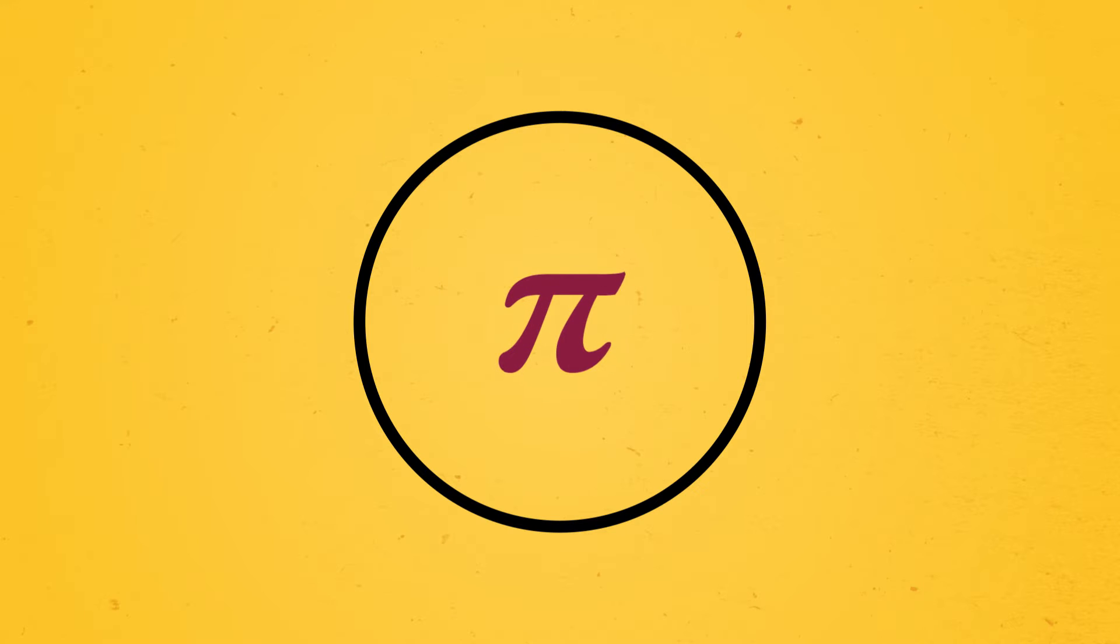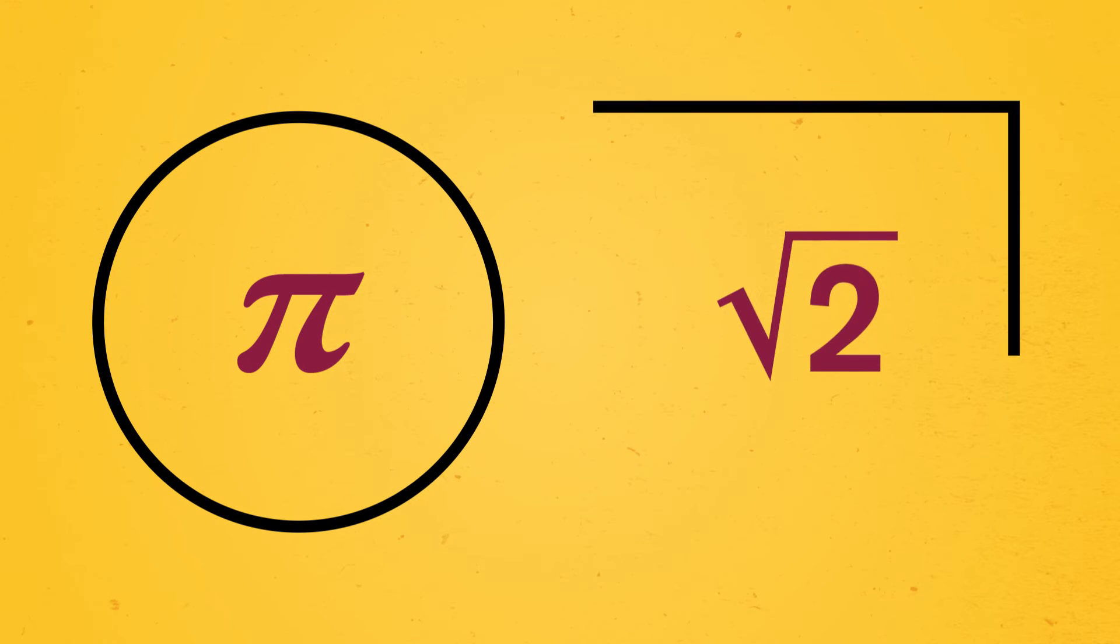Circles, for instance, contain the famous irrational number pi, and the square root of 2 can be found in, well, you guessed it, a square. In fact, the whole concept of squaring a number, or multiplying a number by itself, comes from actual squares.